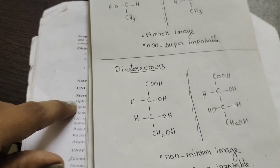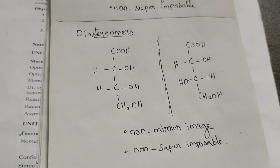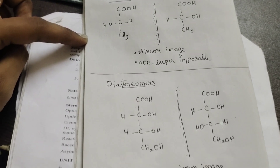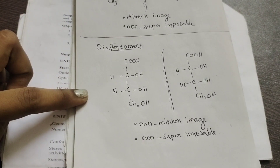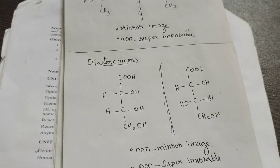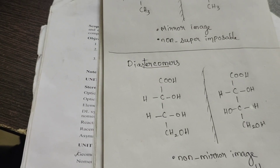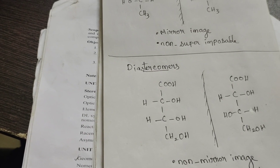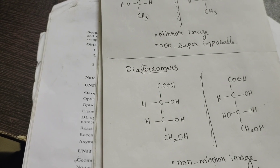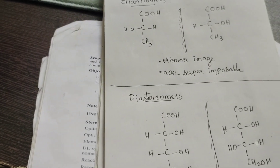Diastereomers: non-mirror image and non-superimposable. That is the difference. Enantiomers are mirror image and non-superimposable. Diastereomers are non-mirror image and non-superimposable. That is the difference between the two. Also, diastereomers have different physical properties, while enantiomers have the same physical properties.